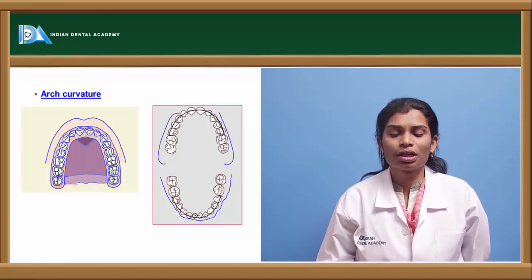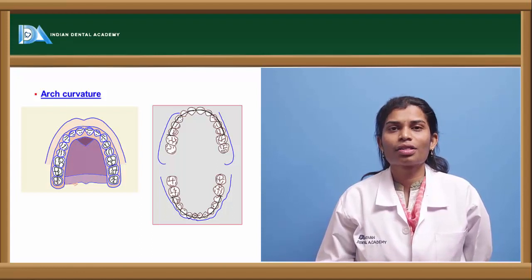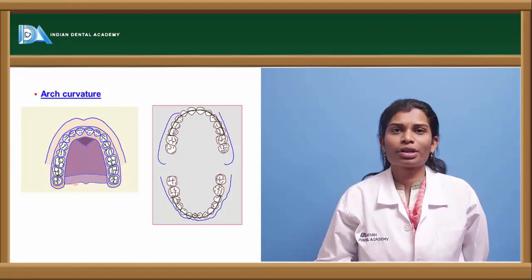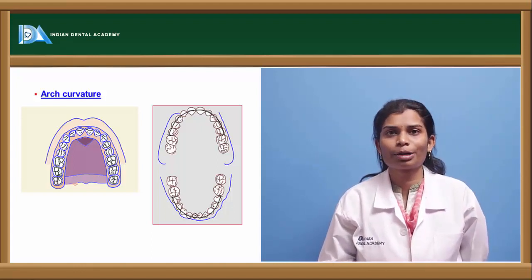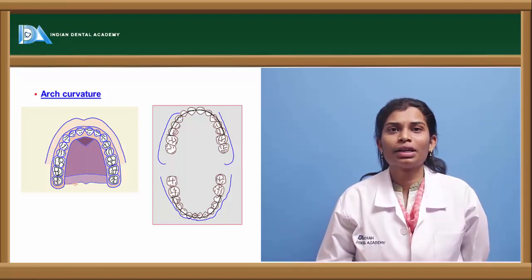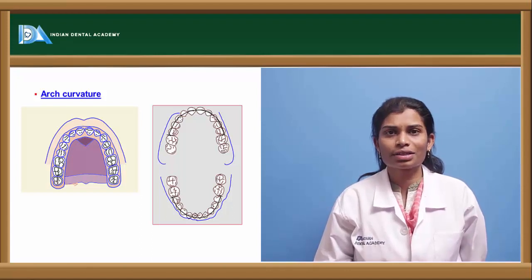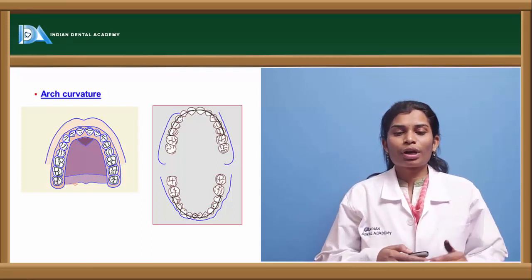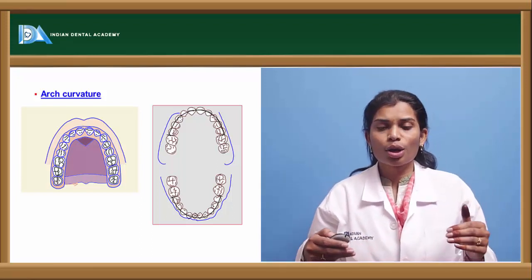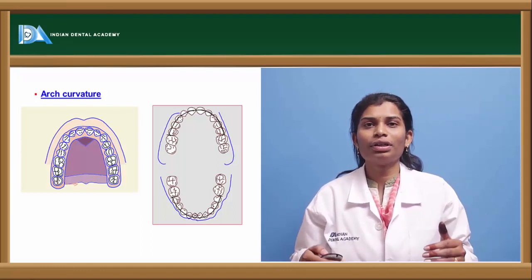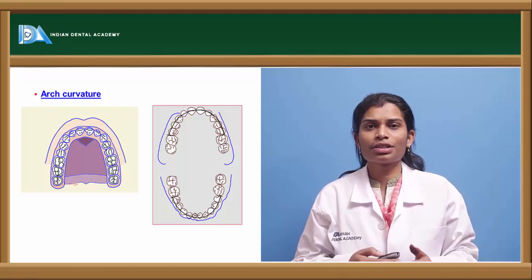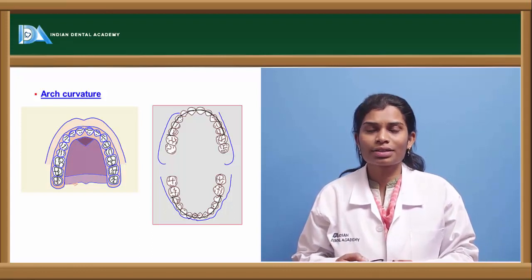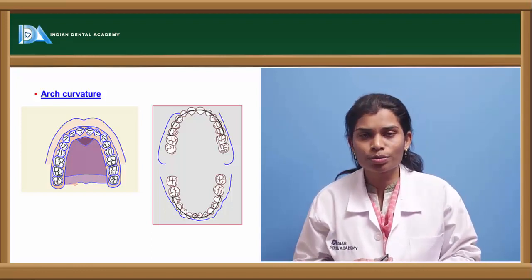Coming to arch curvature, there are different curvatures such as U-shape and V-shape. For anterior edentulous spaces, the anterior-posterior spread of the edentulous span is very important. You have to consider the lever arm under the inter-abutment axis, which acts as the rotational axis for the prosthesis. The inter-abutment axis is the axis passing through the distal-most contact of the terminal abutment or retainer — it is the axis joining both abutments.